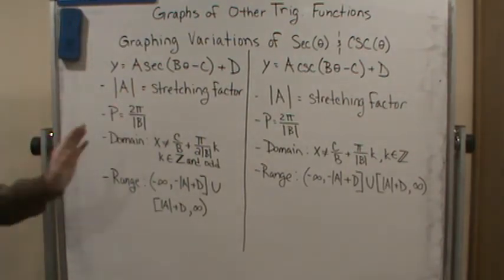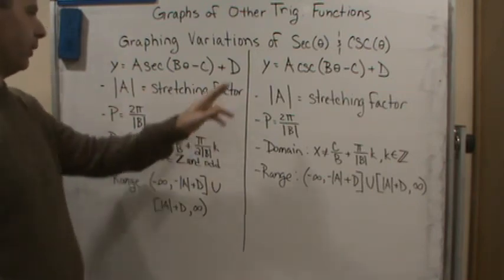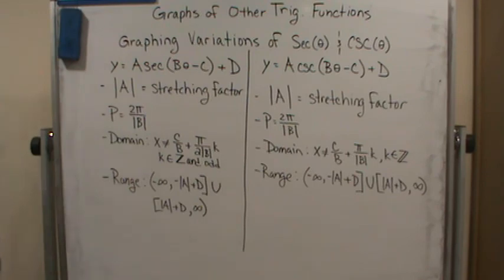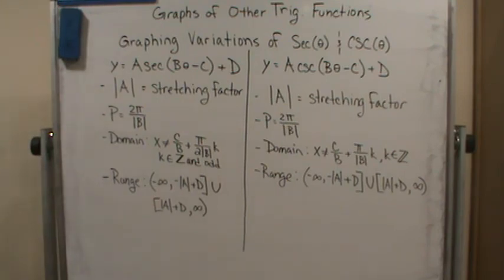There's no amplitude for either one, and then the basic function, without the shifts, remember the basic function for secant is even and the basic function for cosecant is odd, because their corresponding reciprocal functions are also even and odd respectively.